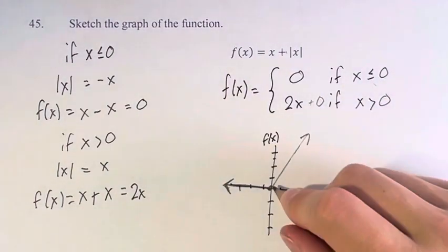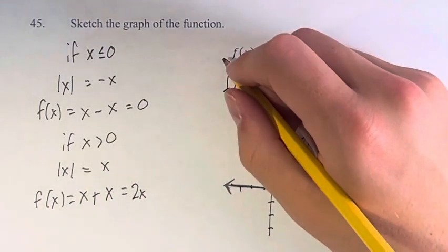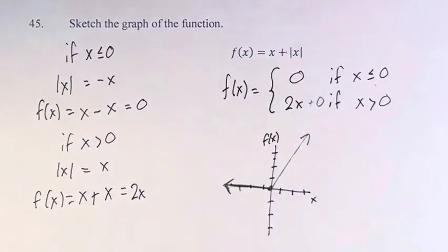So we can just write that as this part of the piecewise. And this is your full function, f(x) is equal to x plus the absolute value of x.